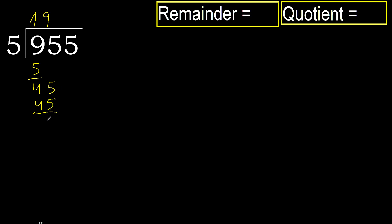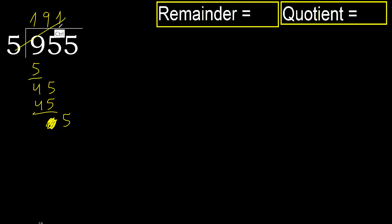45 minus 45 is 0. Next, eliminate the 0 on this side. 5 — 5 multiplied by 1 is 5, which is not greater. Subtract.